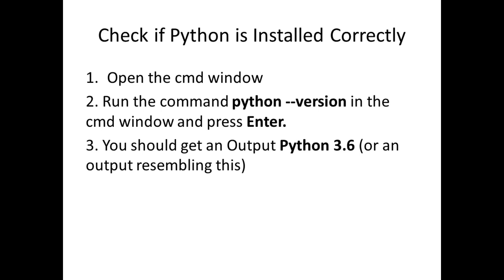The command window app will be shown. Double-clicking on that will give you the command window. At the prompt, run the command 'python --version' and press Enter. You should get an output resembling 'Python 3.6'.